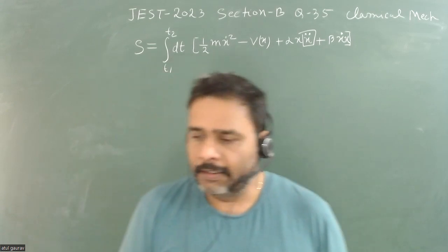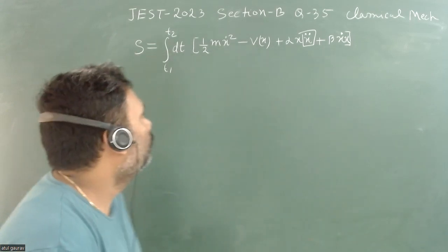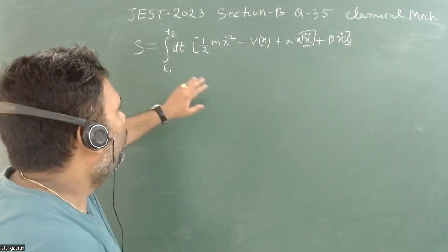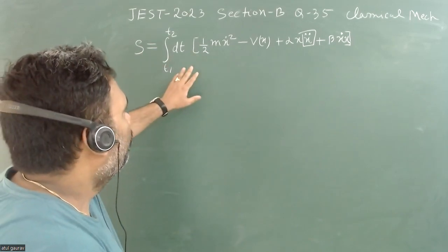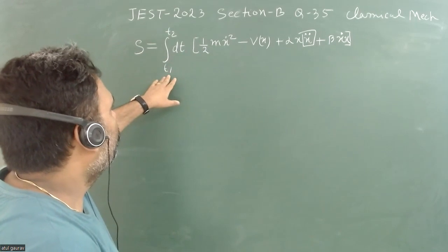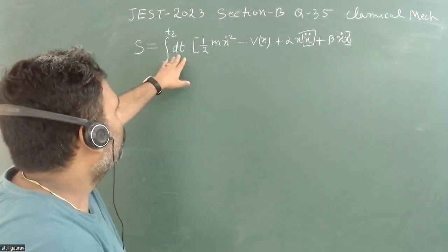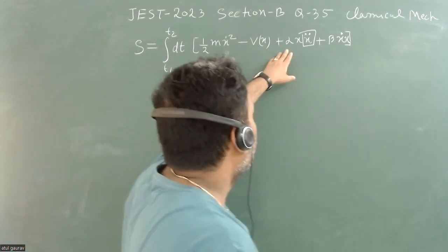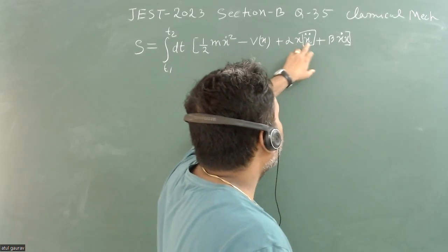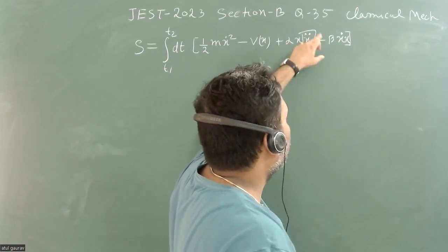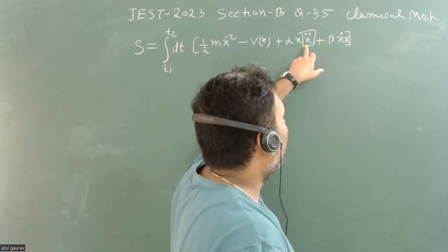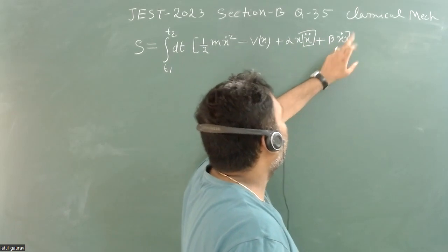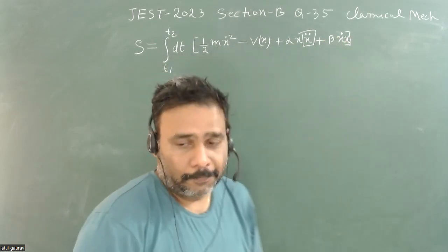So what is this question? The action S is given as the integral from t1 to t2 of dt times: half m x-dot squared, plus alpha x times x-double-dot, plus beta x-dot times x. So this is our action.